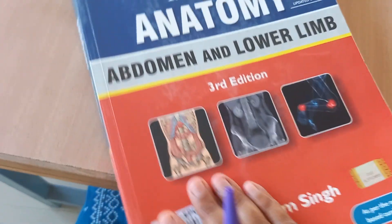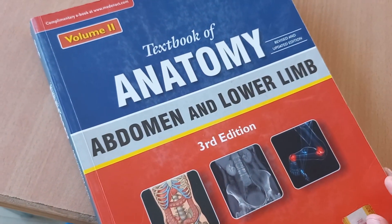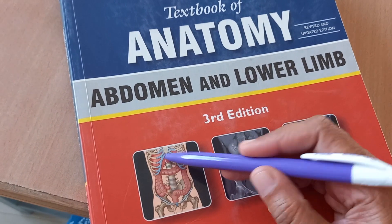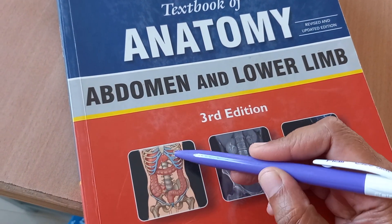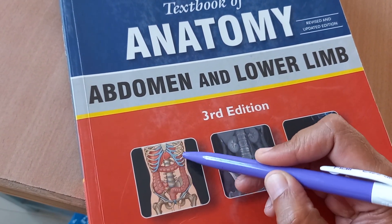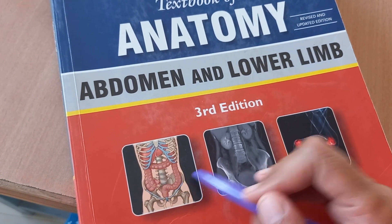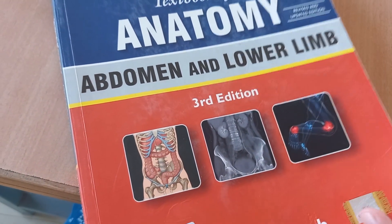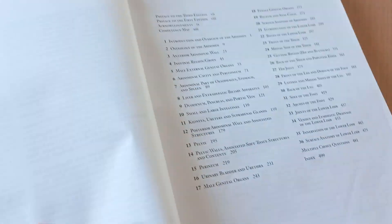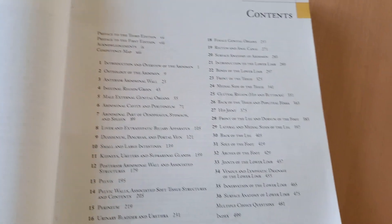So this is the upper limb and thorax. Now let's go to the next book. So this is the abdomen and lower limb. So in the abdomen, you have what are not? Liver, pancreas, stomach, intestine, everything. I think even the pelvis, they are covering here. Urogenital, lower limb. So right and left limb also, they are covering.